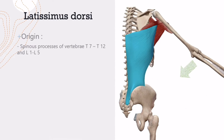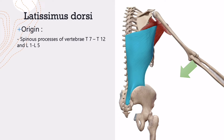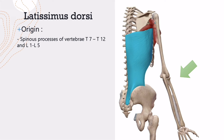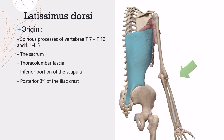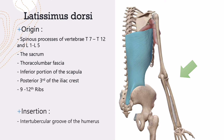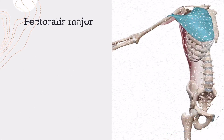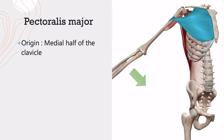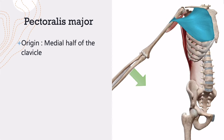Latissimus dorsi is the widest muscle in the human body, thin and covers almost all back muscles at the posterior trunk except the trapezius. Its origin and insertion are as you can see. Pectoralis major starts from the medial half of the clavicle and inserts at the lateral lip of the intertubercular groove of the humerus.